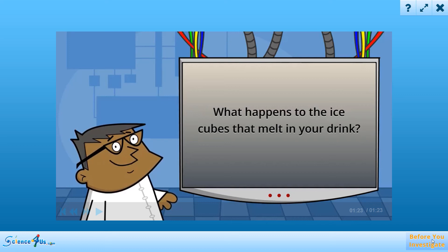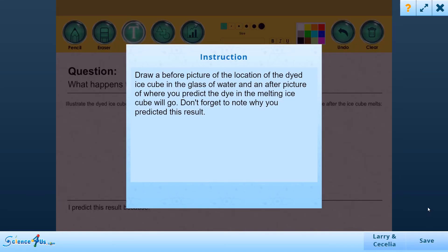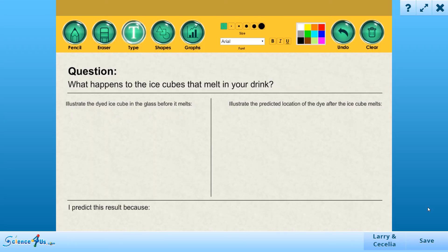Before you investigate, draw a before picture of the location of the dyed ice cube in the glass of water and an after picture of where you predict the dye in the melting ice cube will go. Don't forget to note why you predicted this result. I love the interactive nature of this activity, which prompts the student to first illustrate their predictions before performing the experiment.